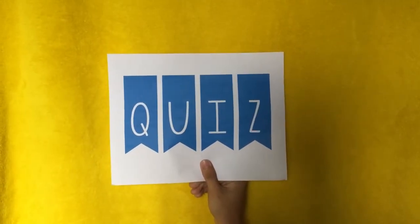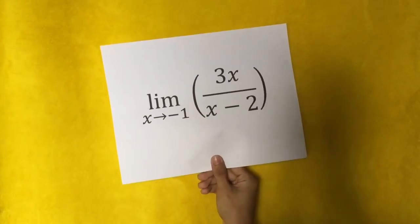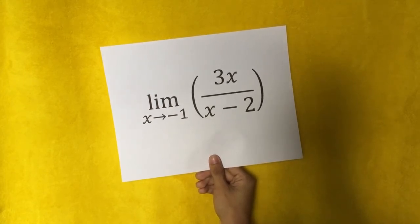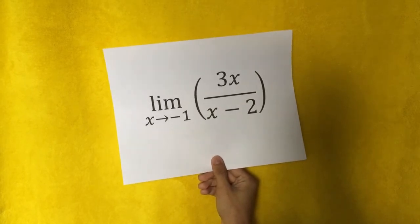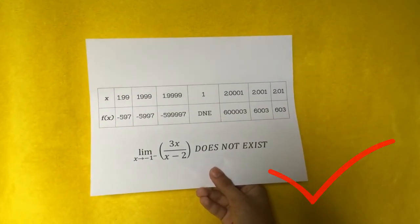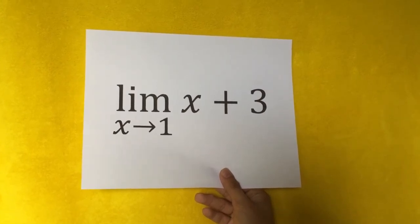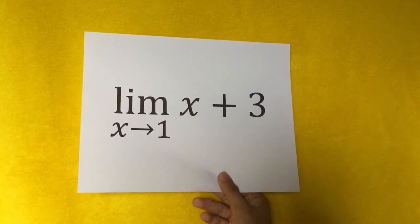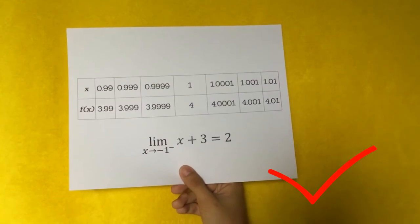Now let's take a quiz — pause if you want to answer honestly. Item 1: Find the limit of 3x over (x minus 2) as x approaches negative 1. Use the table of values to find the limit of the function. Here is the correct answer for item 1. Item 2: Find the limit of (x plus 3) as x approaches 1. Use the table of values to find the limit of the function. Here is the correct answer for item 2.